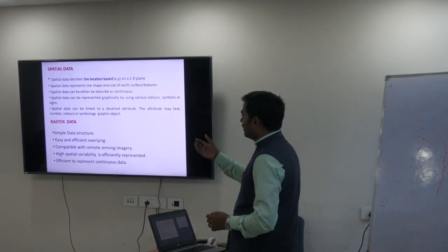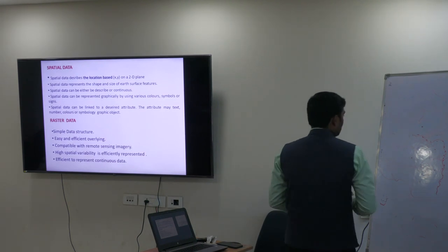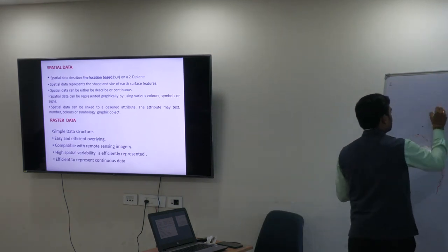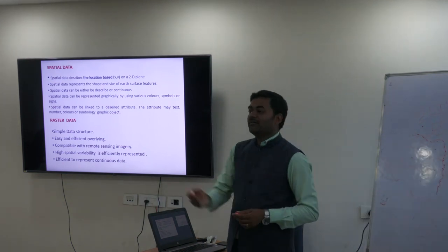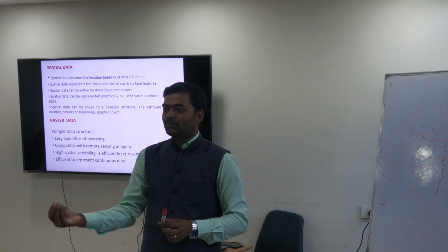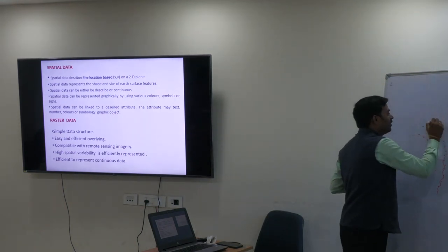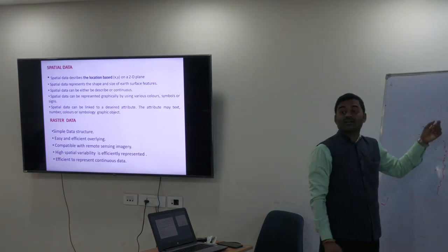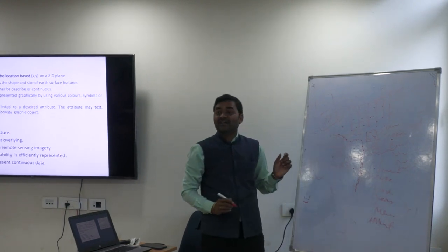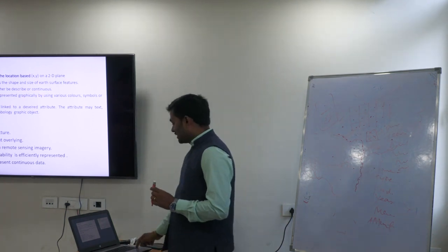Spatial data can be stored in two formats: raster and vector. Raster data is stored in pixel form. Pixel means picture element — just like when you zoom into a photo on your computer, you see the grid of pixels. When your spatial data is stored in this grid form, it is called raster data. Vector data uses point, line, and polygon to draw and represent features with latitude and longitude. Vector data is easy to understand and has a smaller storage size than raster.